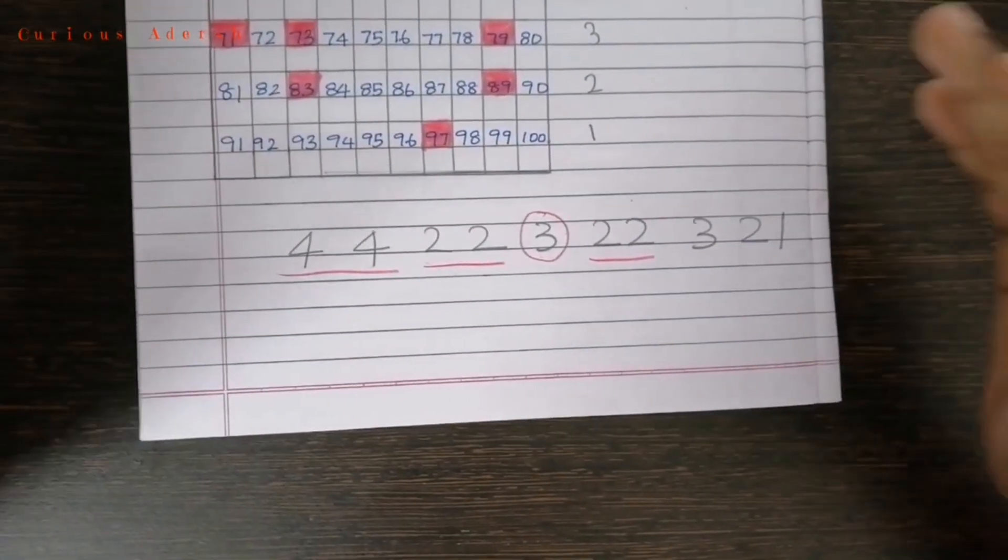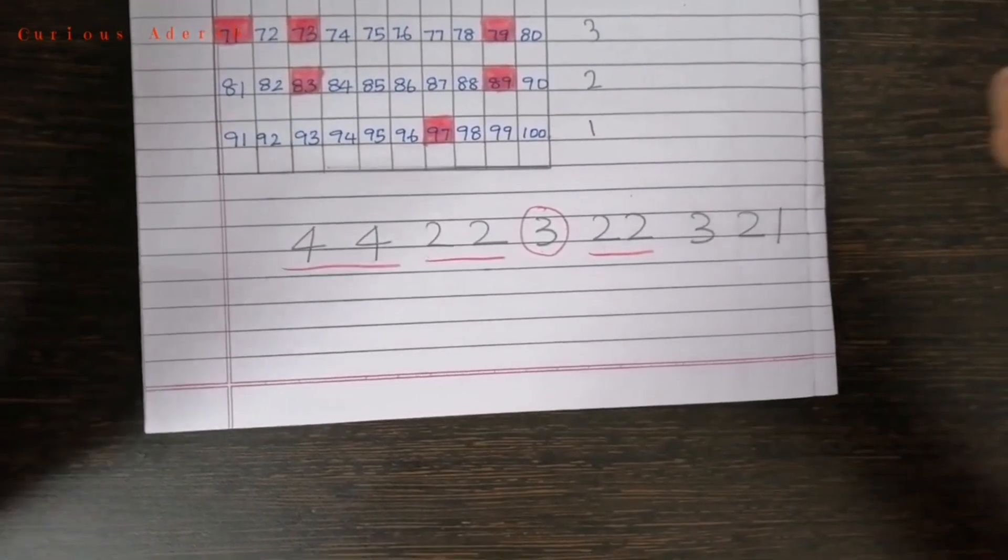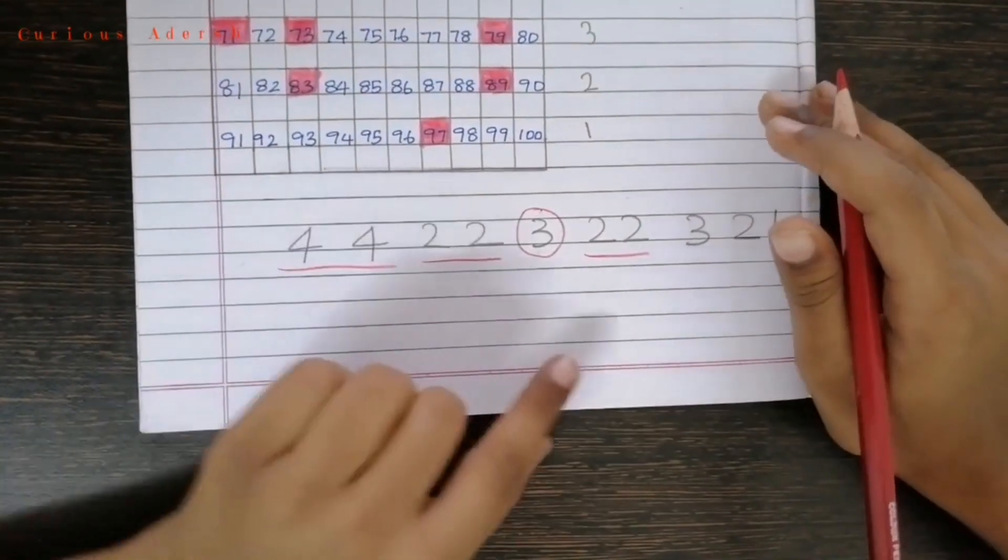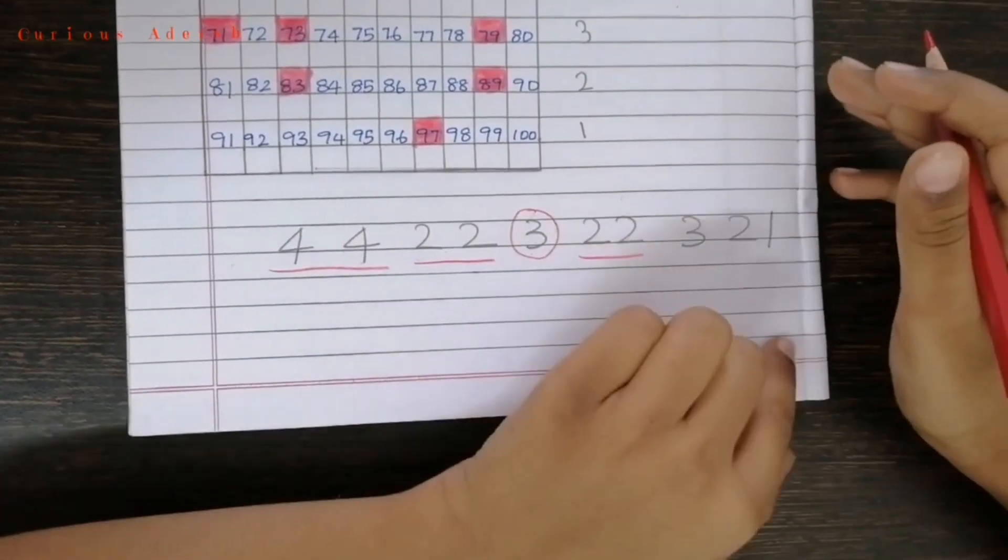So, the secret code or the mobile number of the prime numbers is double 4, double 4, double 2, 3, double 2, 3, 2, 1.